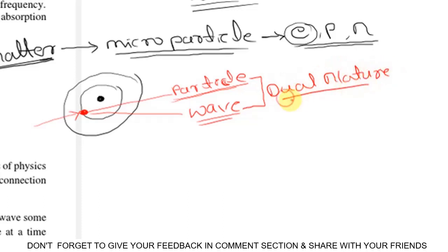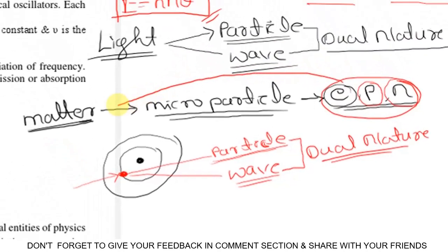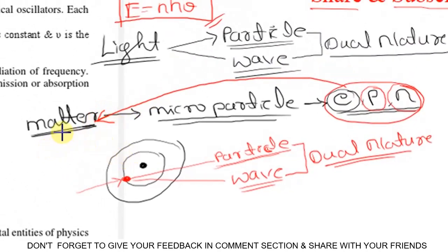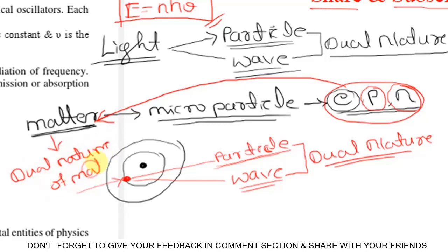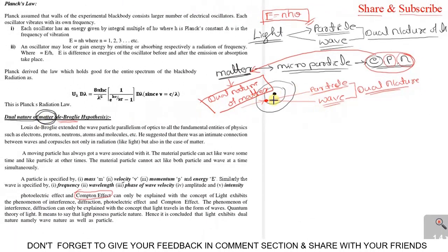If the electron has a dual nature, then microparticles like protons and neutrons also have a dual nature. If these three things have a dual nature, then we can say matter also has a dual nature — that's why we name it the dual nature of matter. I hope you understand why we call it the dual nature of matter.